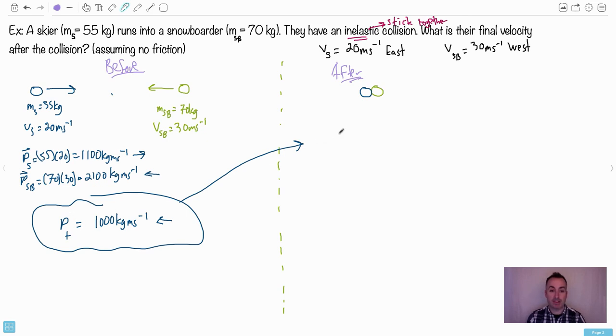So now I know that this total momentum is also equal to this same number right here. Now I know that p total is equal to 1000 here as well. I even know the direction is to the left, or west. So what happens? They're both stuck together. Now I know they're both going that way. What I can do is figure out - I know momentum equals mass times velocity, but I know that they're together, so it's going to be m1 plus m2. In other words, it's going to be 55 plus 70, all that times the final velocity, which I don't know. Remember, I'm actually trying to find that.